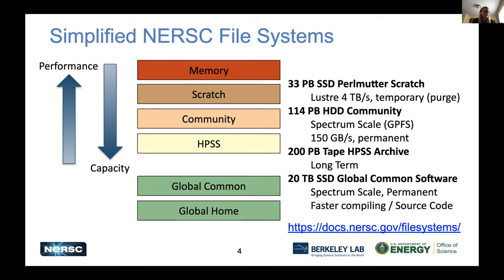Here I've laid out a simplified version of the file systems available at NERSC on both Cori and Perlmutter. At the very top we have memory, which you can think of as a file system because you can temporarily write things to memory. Below that we have the scratch file system. On Perlmutter, we have a 33 petabyte flash scratch system — very fast, with aggregate speeds on the order of terabytes per second. But it's small, so it's temporary and we purge it.